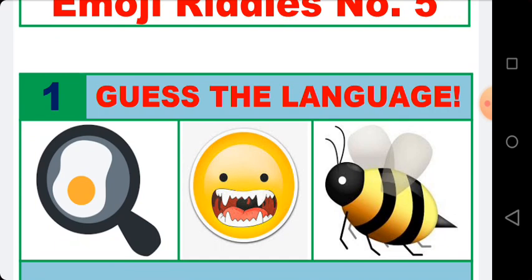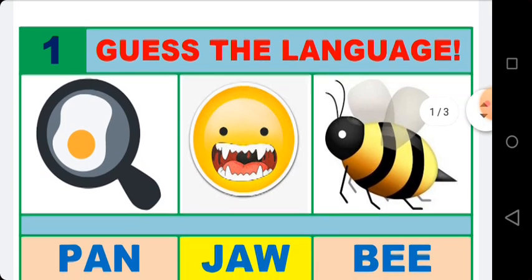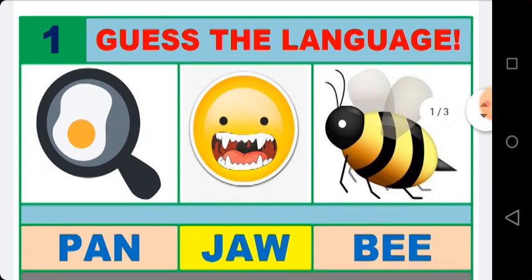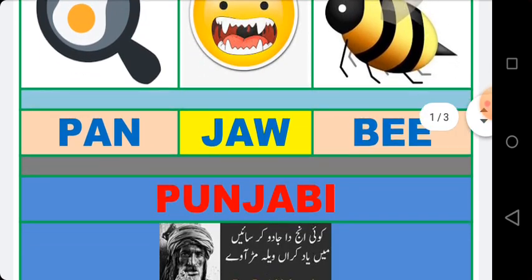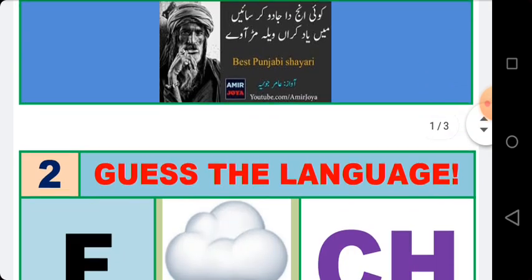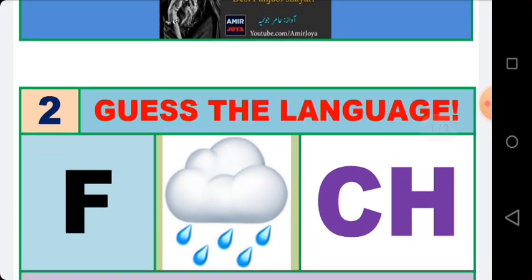Time is over. I'll give you the hint. On the left side is the emoji of 'pan', in the middle the emoji of 'ja', and on the right side is the emoji of 'b' — Panjabi. So the name of the language is Panjabi. You can see the written Panjabi in the picture.